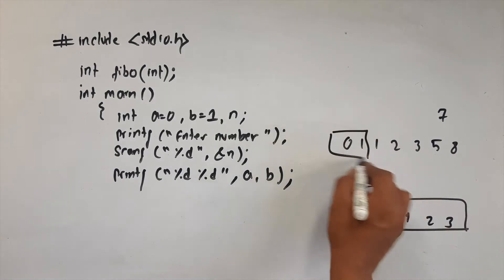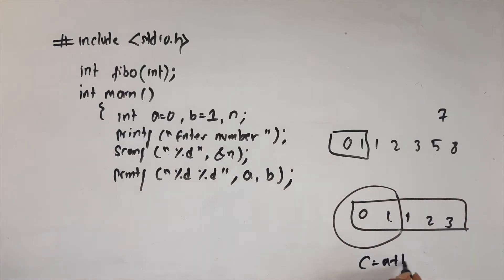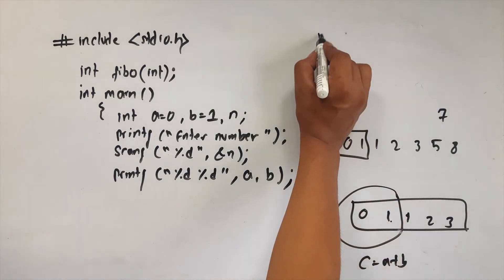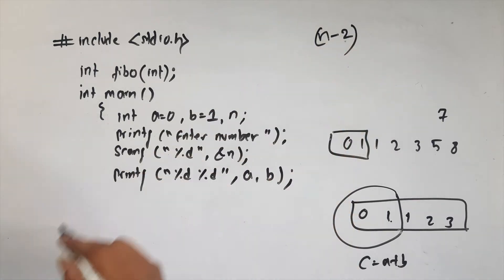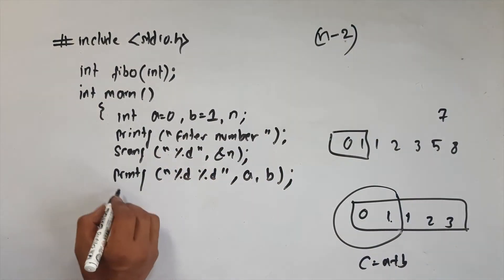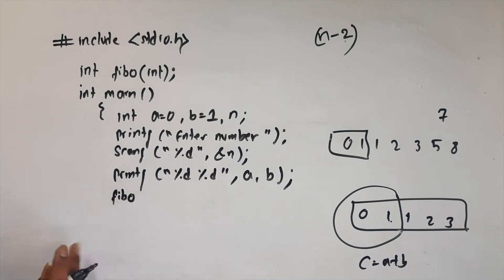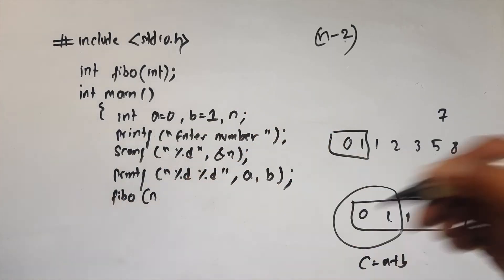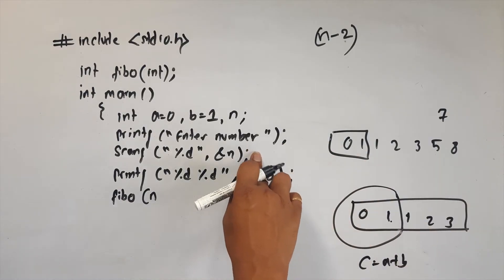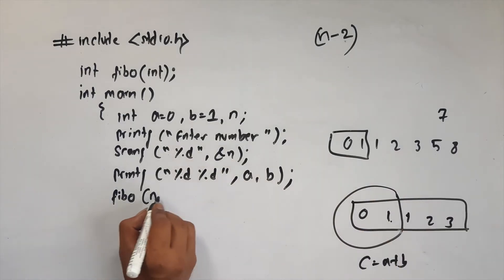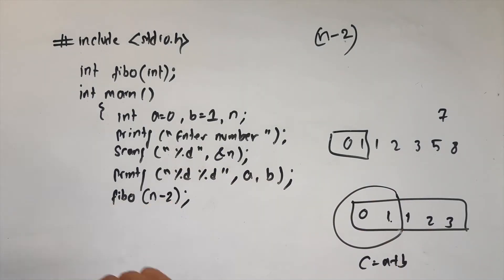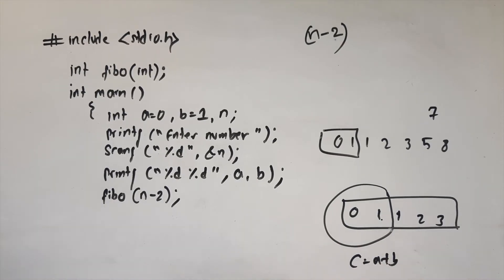Now we have to print this. This is a printable number. The function is called fibo inside the loop. Fibo is called as a function — this is function calling. The value passed is n minus 2. The number n minus 2 is passed to the function. This is the value of the function call.